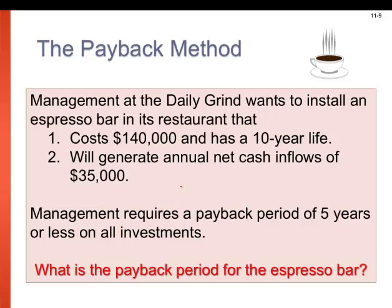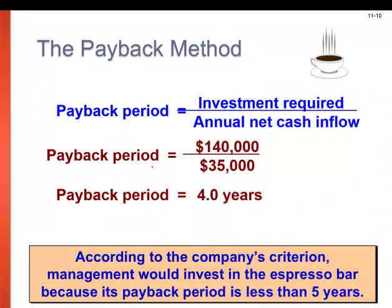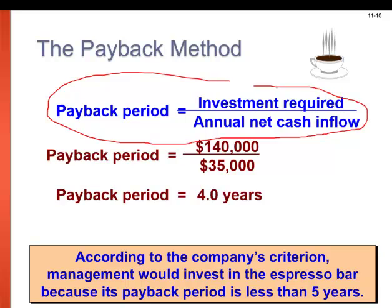Management at the Daily Grind want to install an espresso bar in its restaurant. It's going to cost $140,000, have a useful life of 10 years, and generate annual net cash inflows of $35,000. Management requires a payback period of five years or less on all investments — they want to pay back their original investment within five years. Using our equation: $140,000 divided by $35,000 gives a payback of four years, which is within that five-year period. So management would want to invest in the espresso bar.